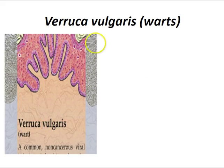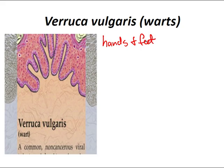Verruca vulgaris, or warts, is generally a small, rough tumor typically on the hands and feet, but often other locations — it can resemble a cauliflower or a solid blister. Plantar warts grow on pressure points on the soles of the feet. Warts are caused by a viral infection, specifically the human papillomavirus (HPV), and are contagious through skin contact or shared objects. They typically disappear after a few months but can last for years. Condyloma acuminata on the genitals is also caused by HPV.